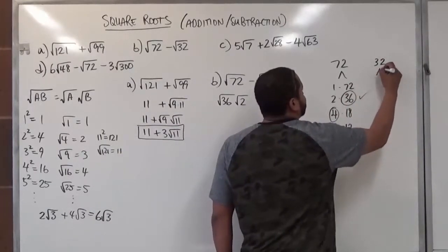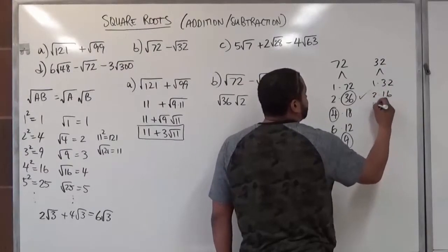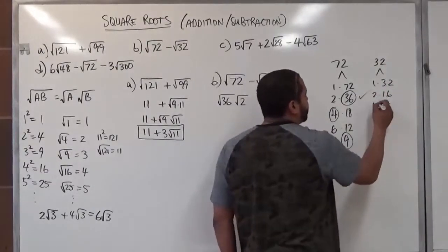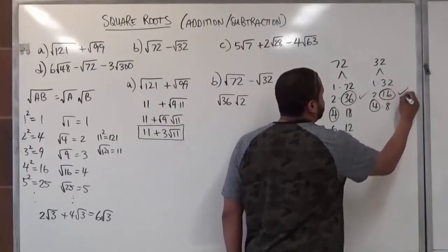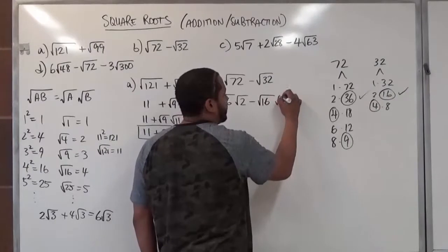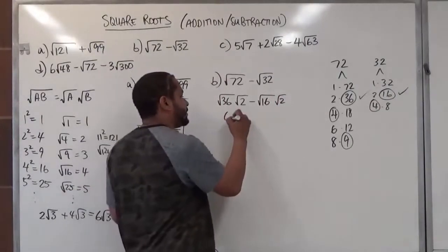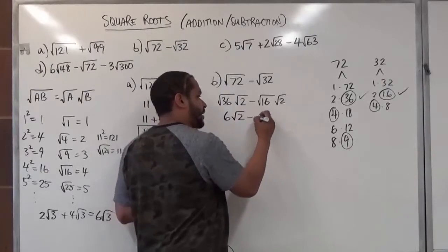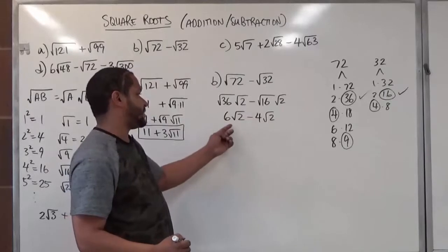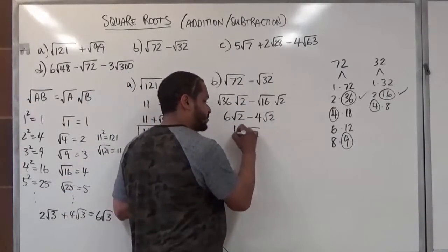Similarly, we break down 32: its factor pairs are 1 and 32, 2 and 16, and 4 and 8. The largest perfect square is 16, so we use the square root of 16 times the square root of 2. Now we have the square root of 36 times the square root of 2 minus the square root of 16 times the square root of 2, which becomes 6 radical 2s minus 4 radical 2s. Since they're the same object, 6 minus 4 gives us 2 radical 2s.